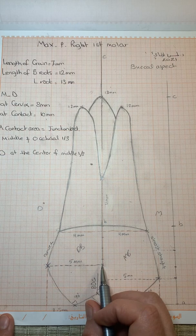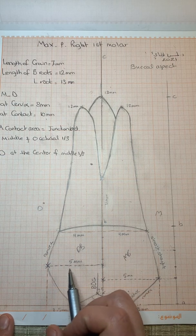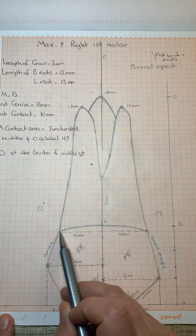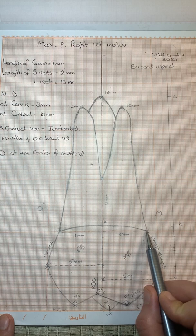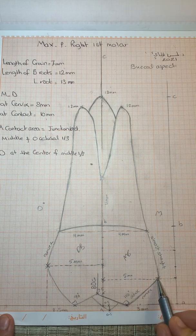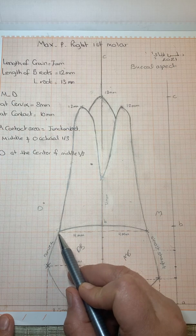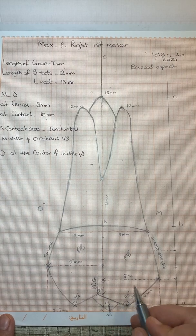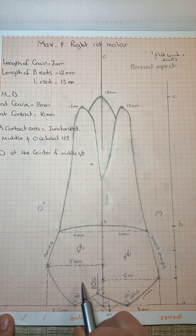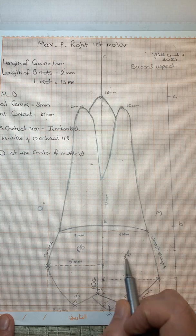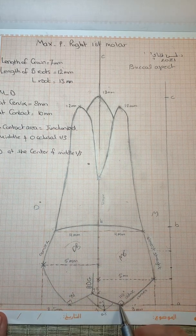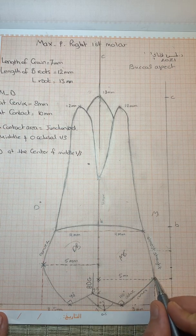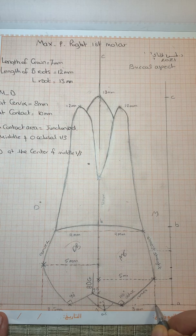The outline — the cervical line — is slightly convex. The mesial outline from the cervix to the crest is almost straight, while the distal outline is convex. We will now define the cusp tips. From this buccal aspect, we have two cusps: the mesiobuccal cusp and the distobuccal cusp.